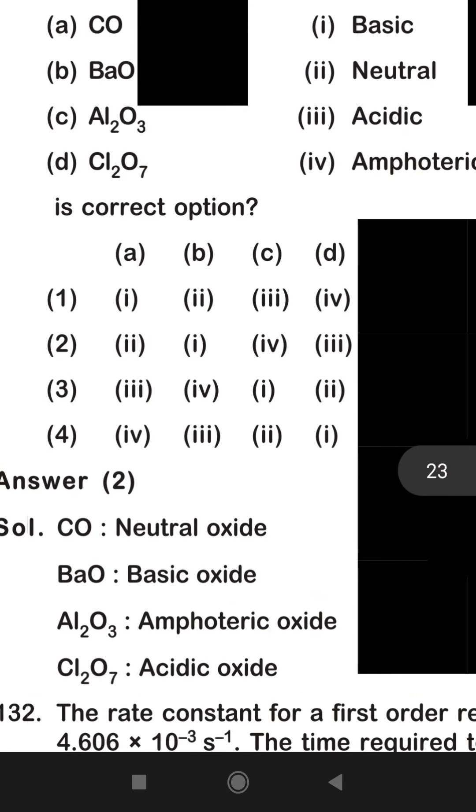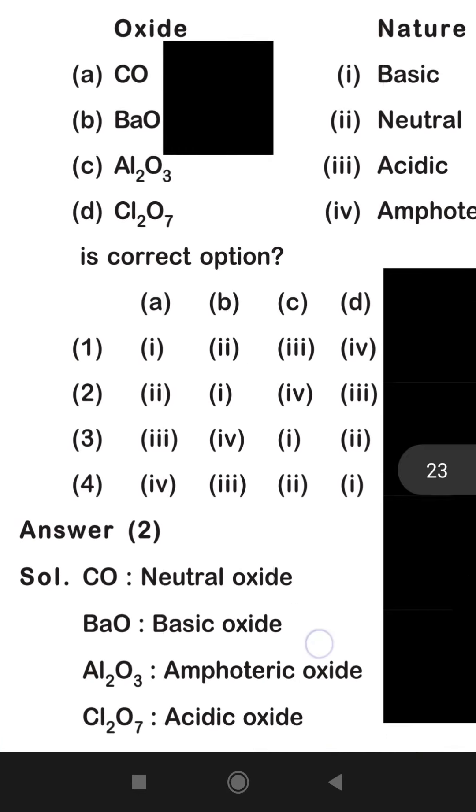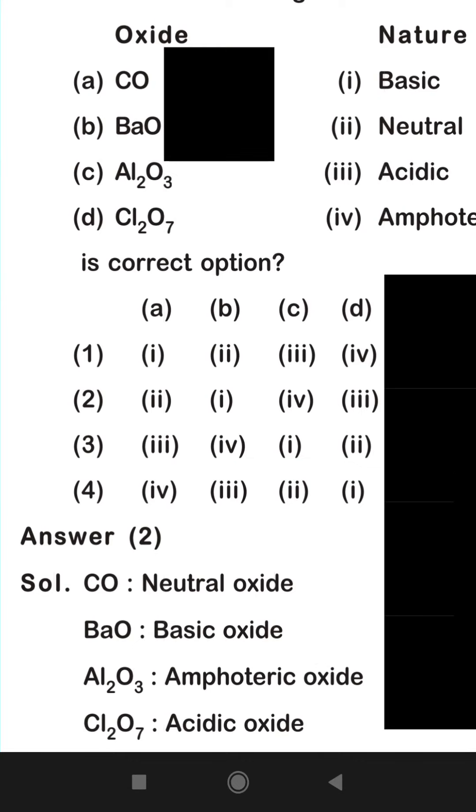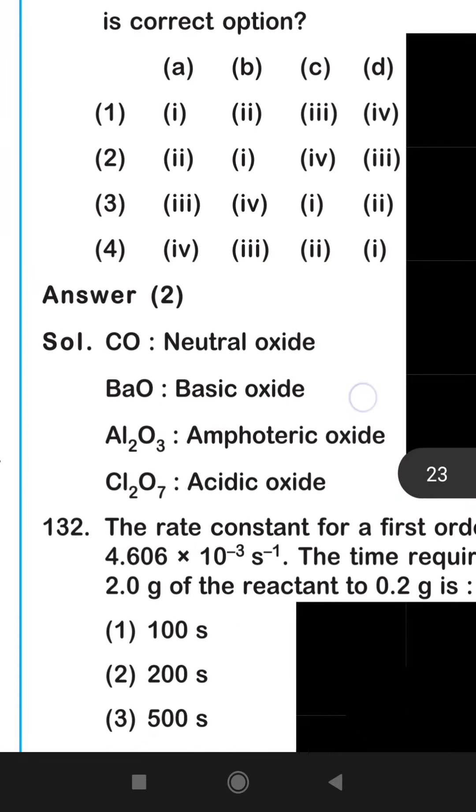CO is neutral oxide, BaO is basic oxide, Al2O3 is amphoteric oxide, and Cl2O7 is acidic oxide.